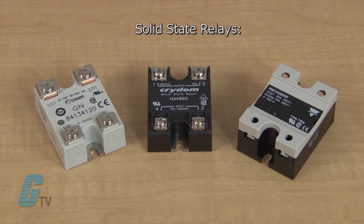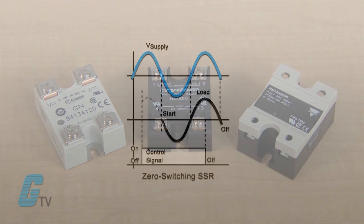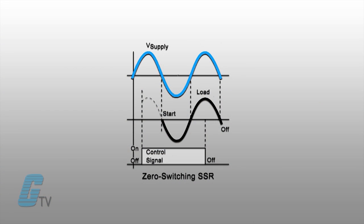A few different types of solid state relays are zero switching, instant on, peak switching, and analog switching. The most common solid state relays are zero switching relays, which turn on the load when the control voltage is applied and the load voltage crosses the zero point of the AC sine wave. The relay turns off the load when the control voltage is removed.